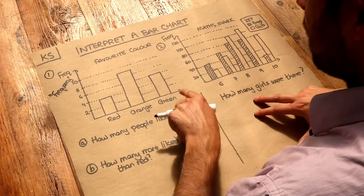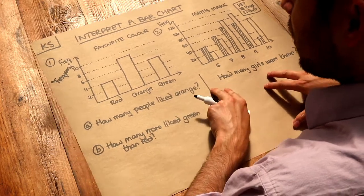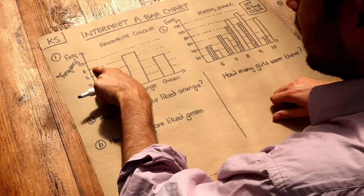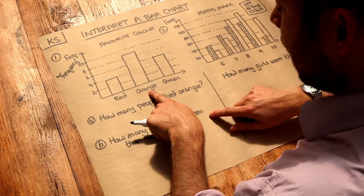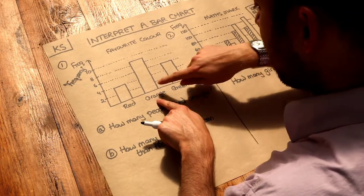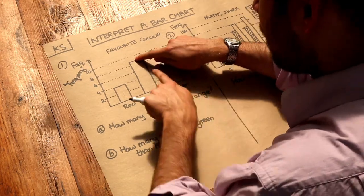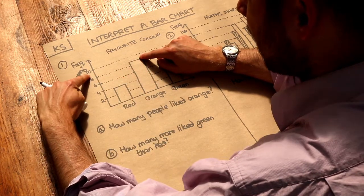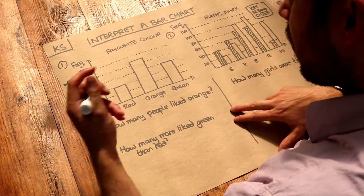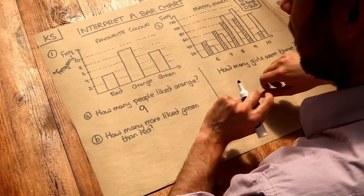So let's read off these values on the frequency axis. How many people liked orange? Here are the people who liked orange. We go up to the top of the bar and we can see as we go across that's halfway between 8 and 10, so 9 people liked orange. That is the frequency.